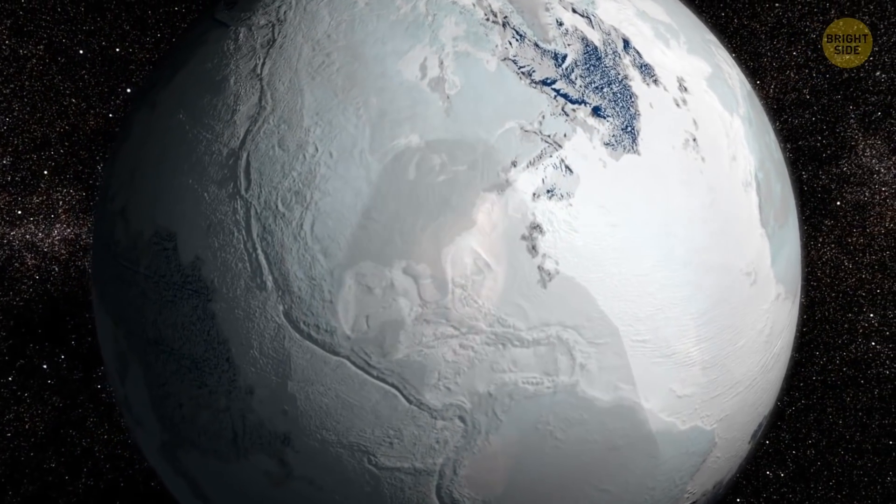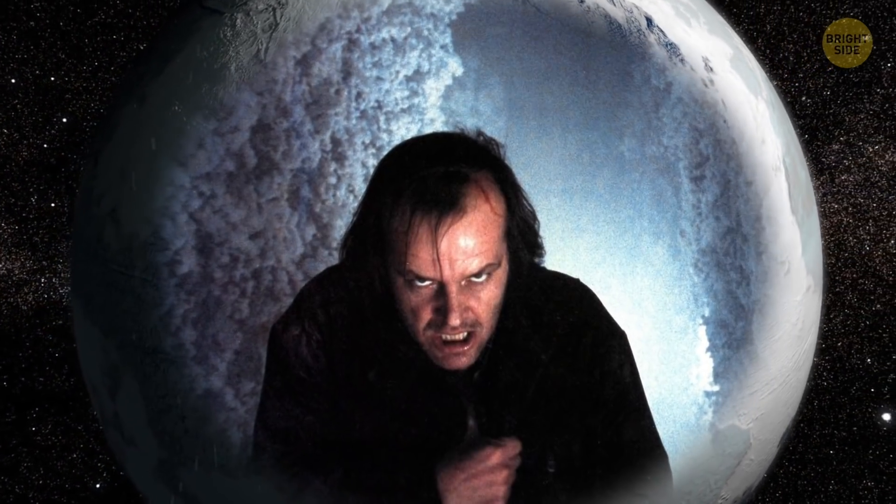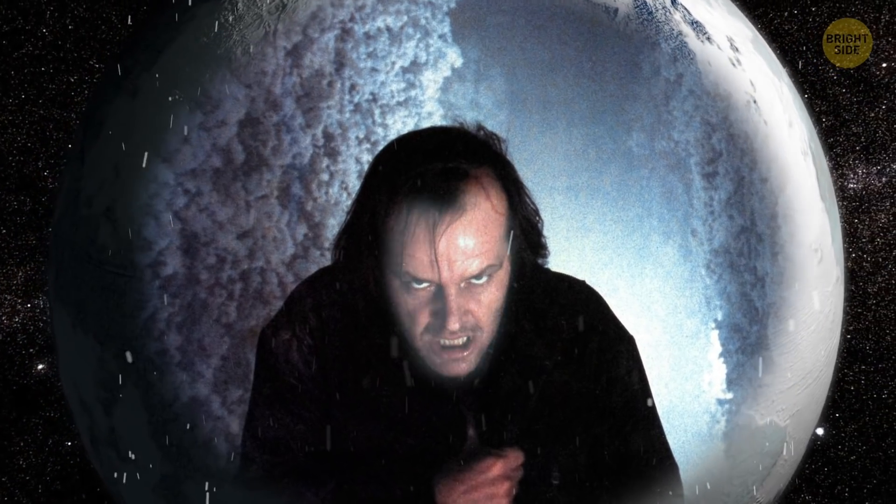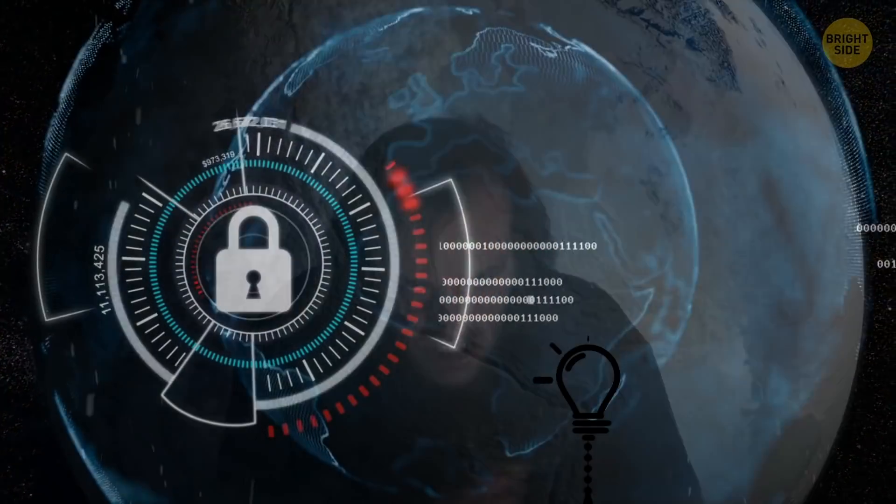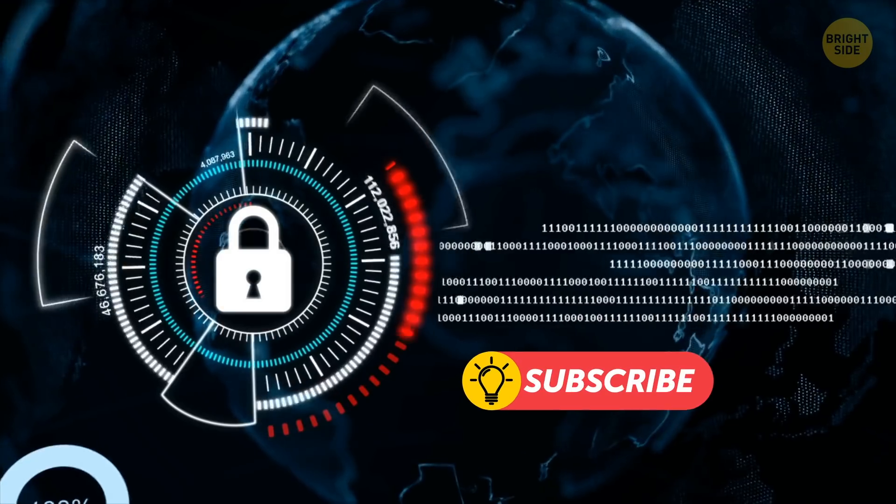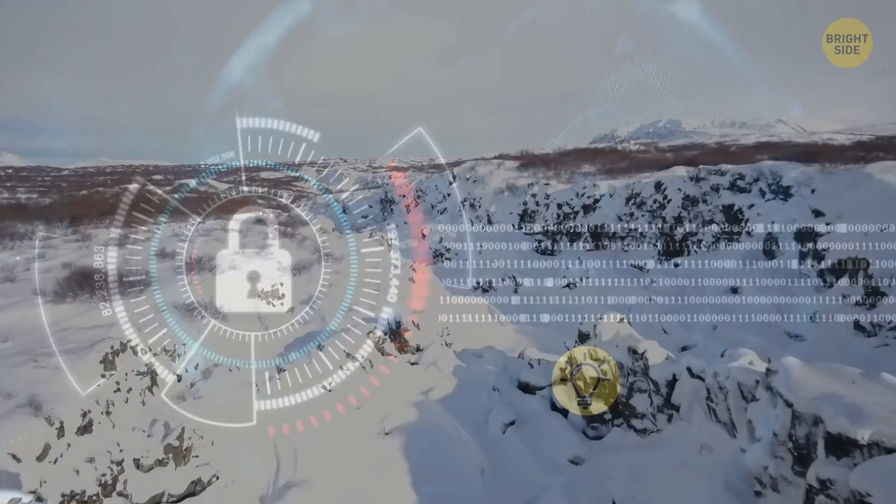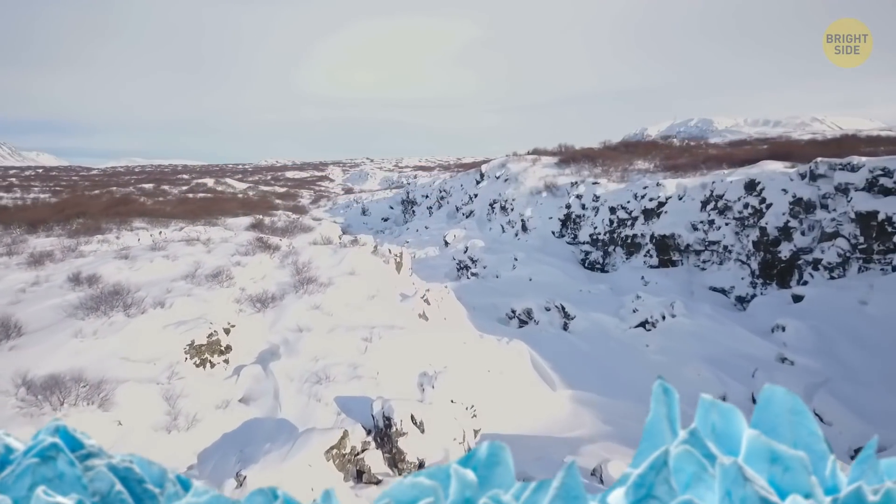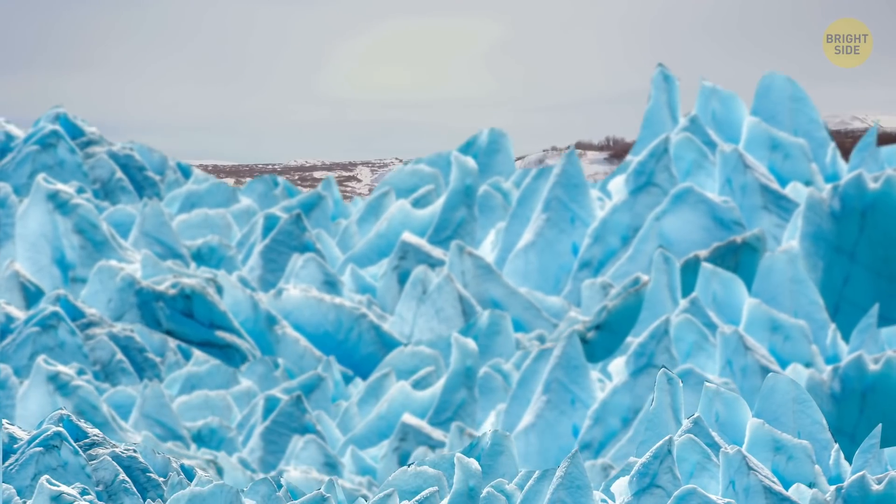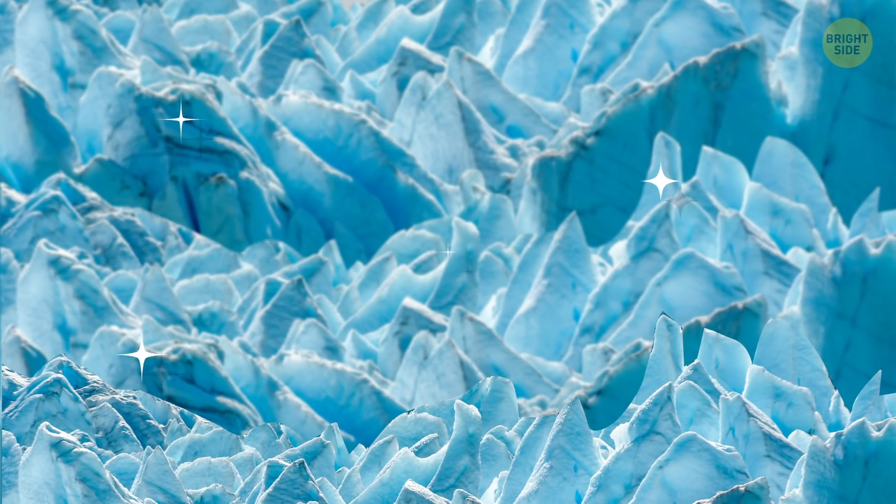But I can guess what you're thinking now. How come I'm still talking to you if my planet has become uninhabitable? That's because, unsurprisingly, people don't live on Earth anymore. With the sun turned into a red dwarf, the solar system we had known disappeared.